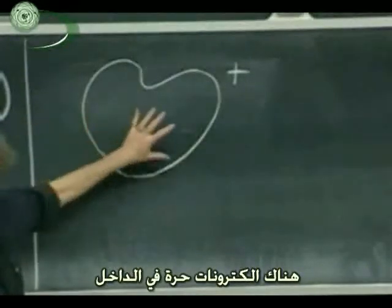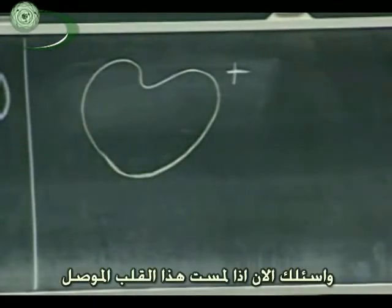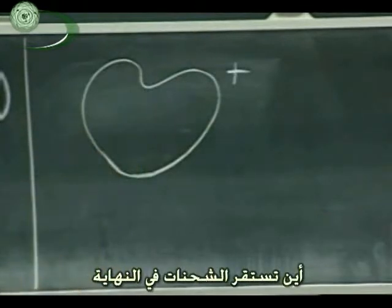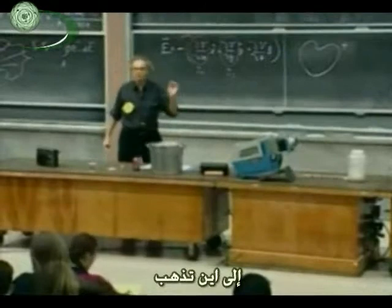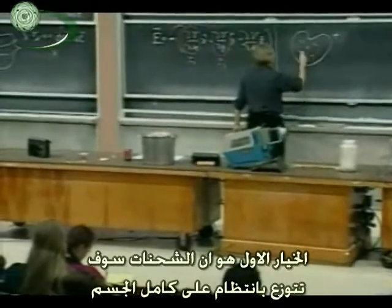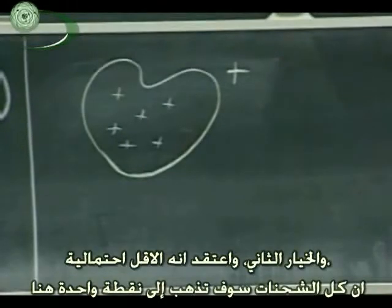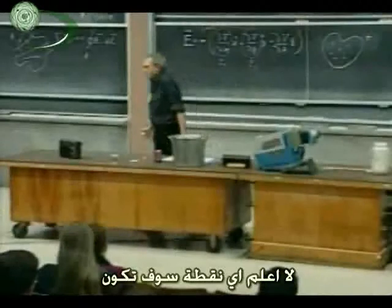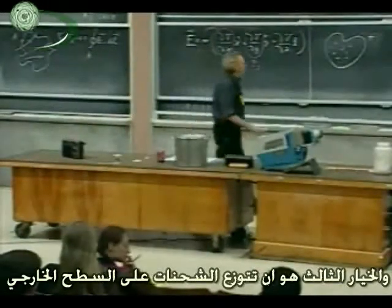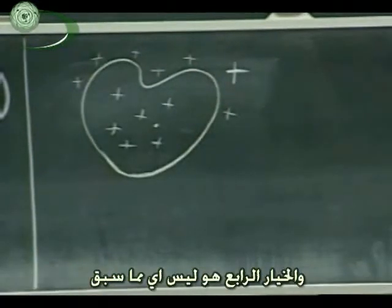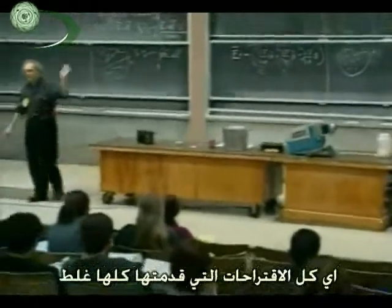This has free-moving electrons inside. I'm asking you: if I touch this conducting heart — and by the way, your heart is a very good conductor — where would this charge end up? I leave you with three choices and we'll have a vote. First: the plus charges uniformly distribute throughout. Second: all the charge goes to one point. Third: the charge uniformly distributes only on the outer surface. And fourth: none of the above. Those who suggested uniform on the outside I would give a B, but it's not uniform — it will go exclusively to the outside, and I will prove that now.